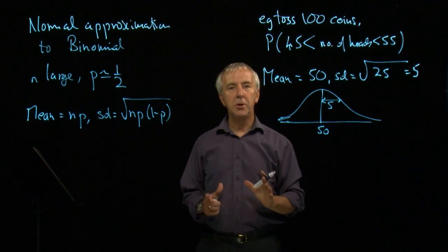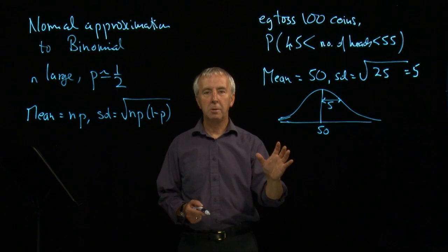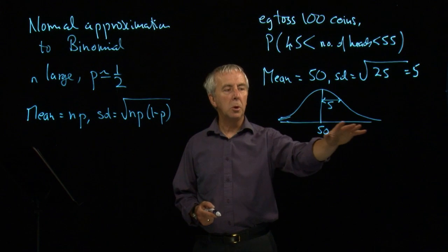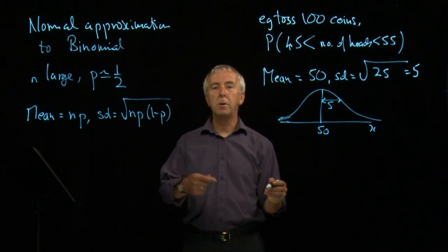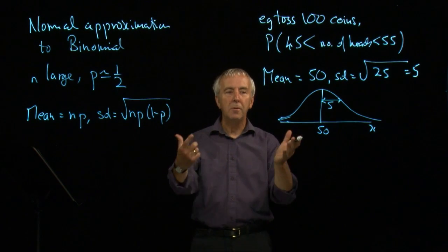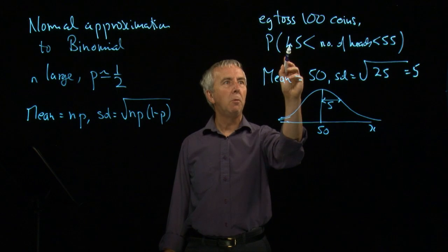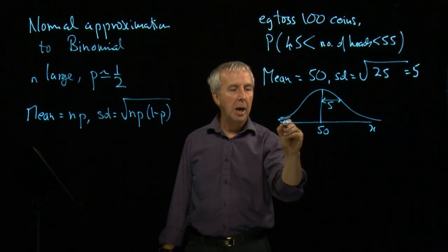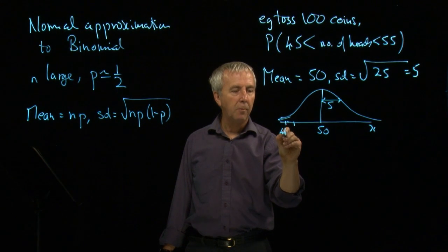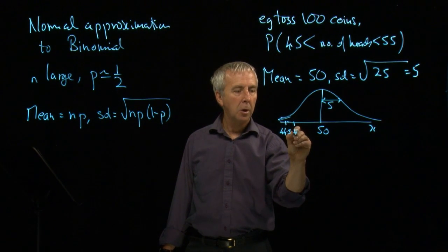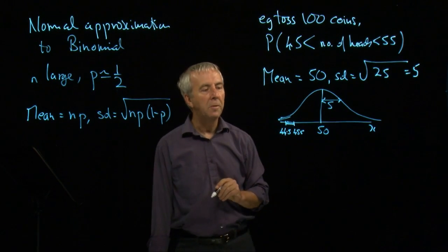The binomial is a discrete distribution. You either have 45 or 46. The normal distribution is continuous. 45, 45.1, 0.2, and in fact every decimal in between. So what we have to realize is that 45 heads actually corresponds on this scale to anything from 44.5 to 45.5. All of that is 45.